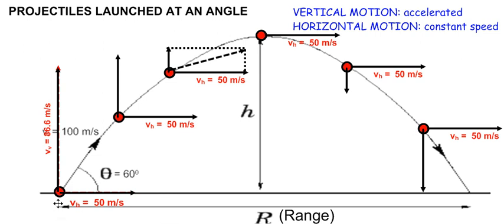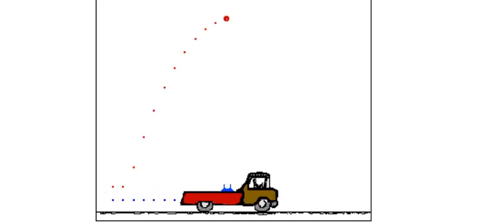If we know the time of flight, we can multiply by the horizontal velocity to find the maximum range. To find the time of flight, we can utilize the time it takes for the projectile to go from its launching point — with an upward velocity of 86.6 m per second — to reach maximum height, and multiply by 2. Let us take some time to view a vertical launch.